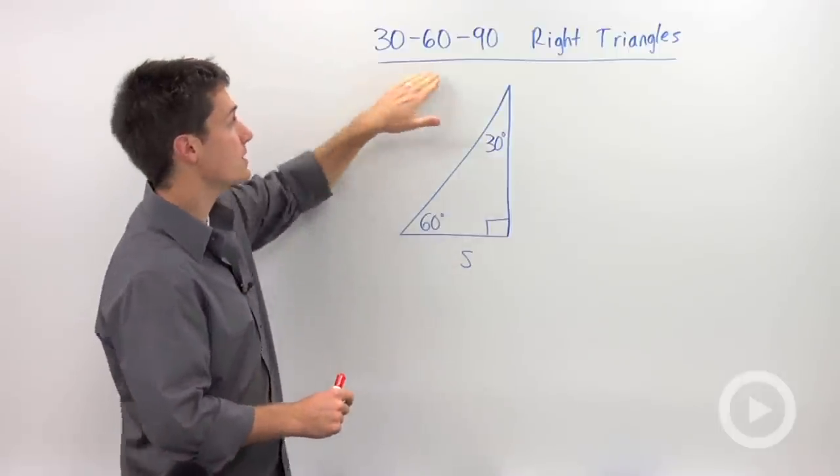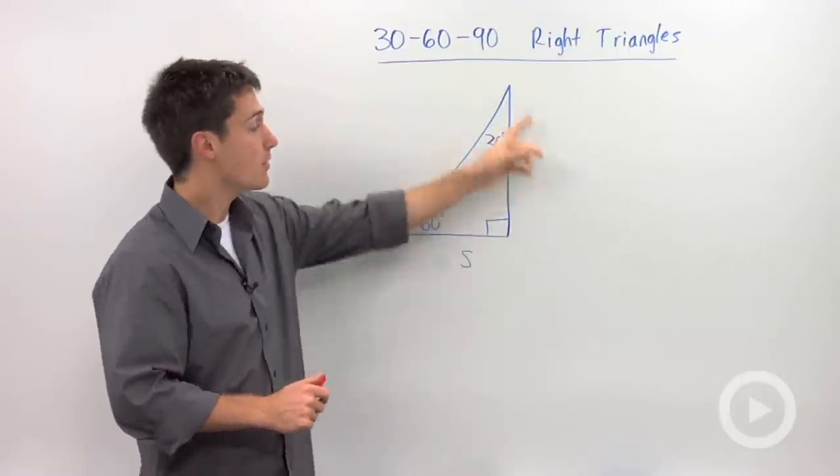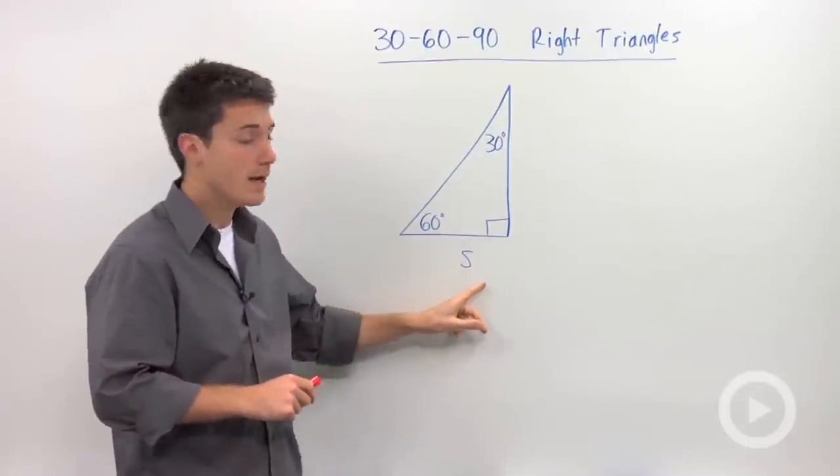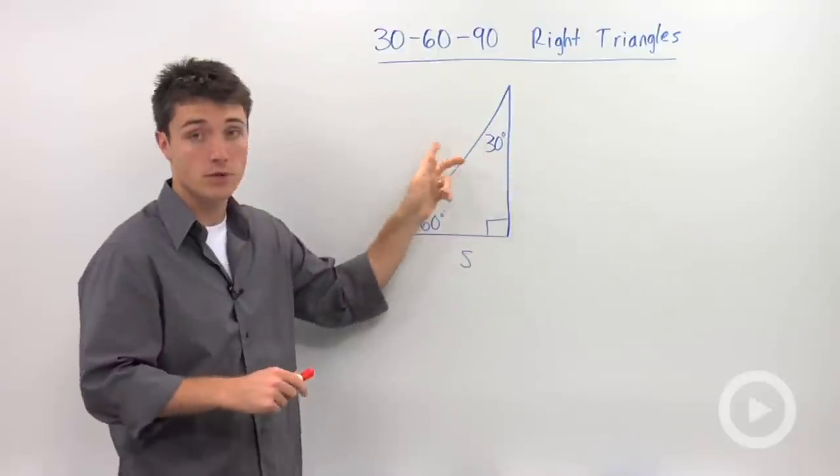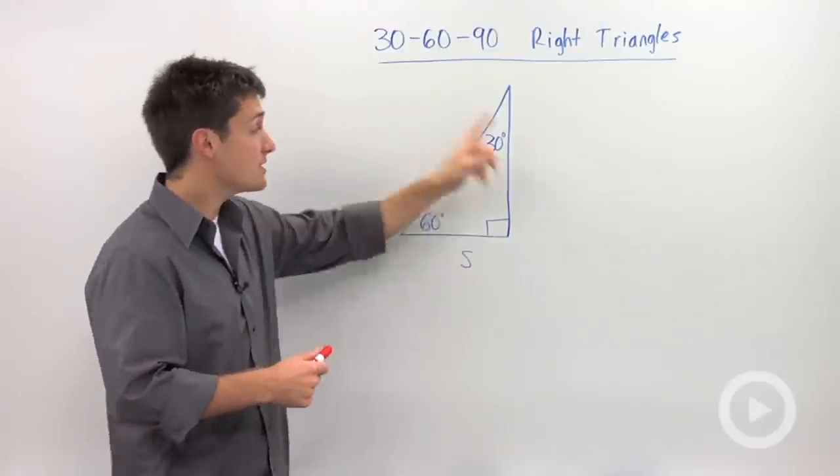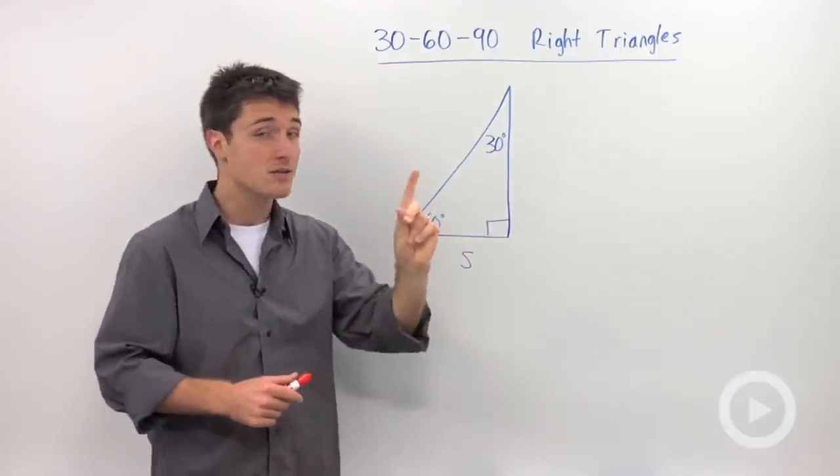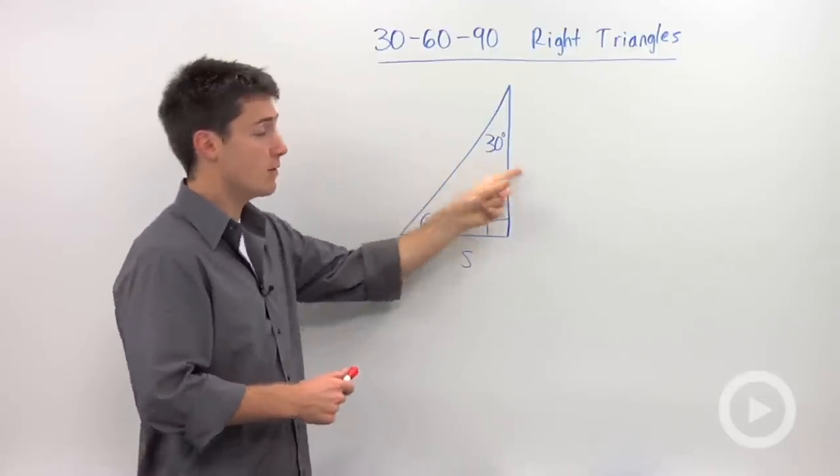Now what's special about this 30-60-90 triangle is that of the three sides that are all going to be different, I only need to know one and I can find the other two. So that's pretty amazing that of the three sides of a triangle, when it's 30 degrees, 60 degrees, and 90 degrees, I only need to know one side and I can find the other ones.